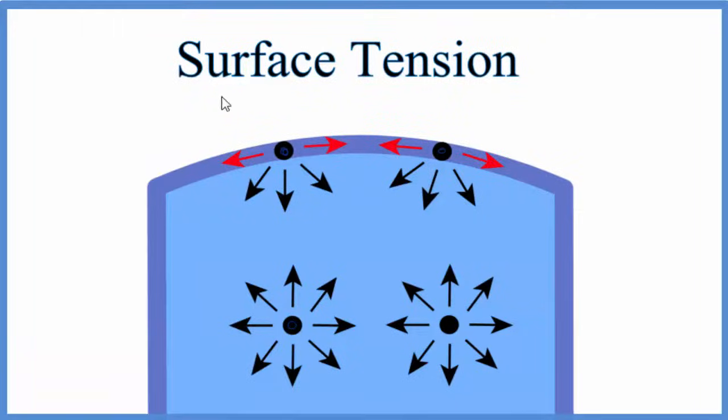In this video we'll talk about surface tension as it applies to water. Surface tension is a property of a liquid like water that lets it resist an external force. That's because water molecules are sticky - they stick together due to hydrogen bonding, and that forms the surface tension.